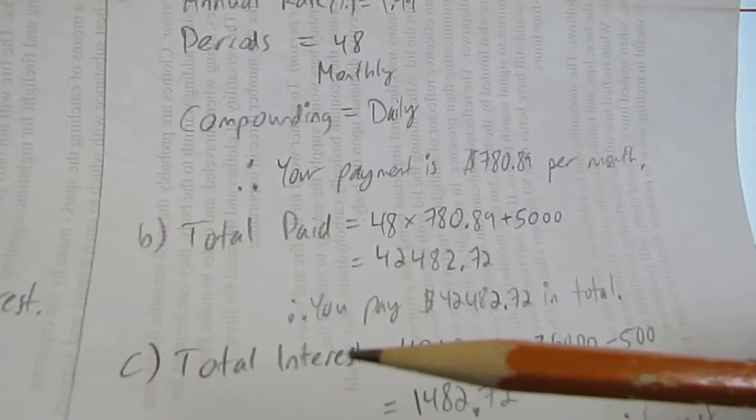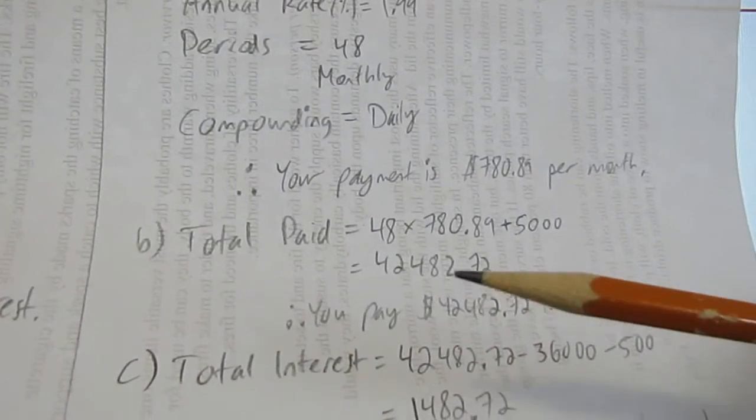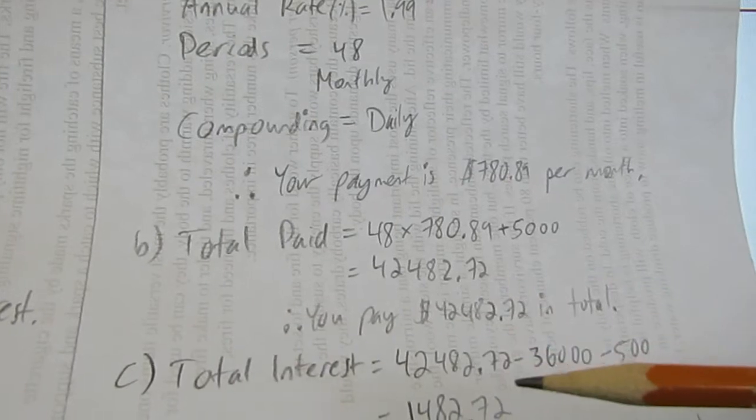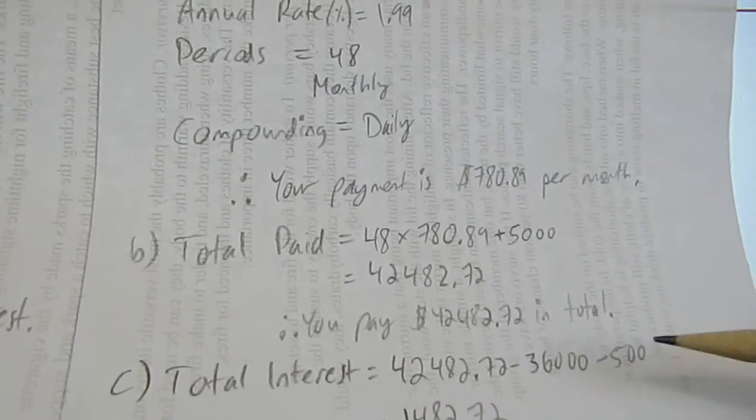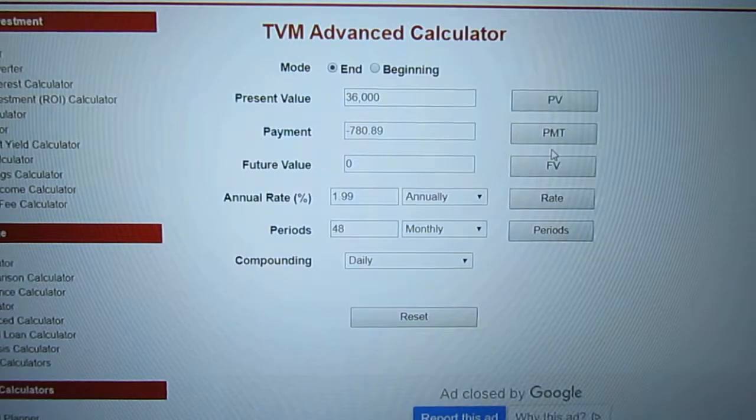When you're doing total interest, it's always your total paid, take away your loan, but also, oh, forgot a zero there. But also take away the down payment.